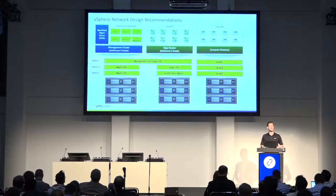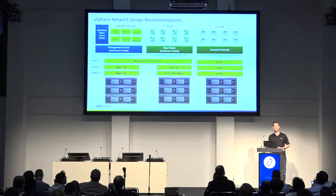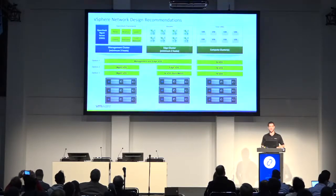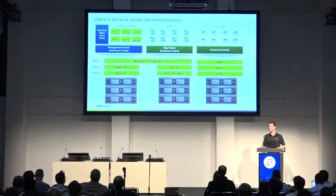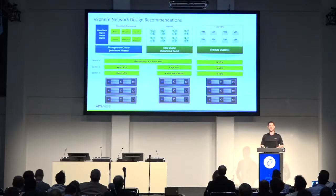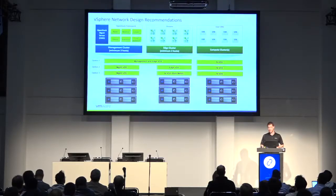I've got a couple of points here around different design options. With switching, we typically recommend three separate clusters by function. You're going to have separate management from your edge functions. The edge function in NSX is our egress from the NSX environment, our north-south connectivity, and it provides resources for stateful services. Then we've got our compute clusters — typically we scale them independently, sometimes on a tenant or project basis. That's the typical architecture. At smaller scale you can collapse these, but it's generally good practice to separate your management environment to a few hosts on the side so you can change-control it separately, including OpenStack.